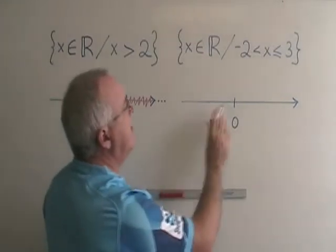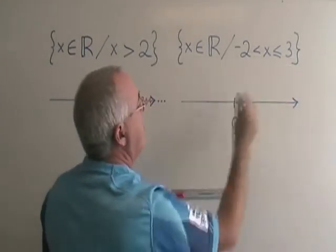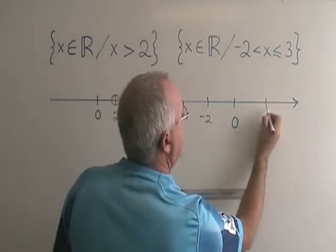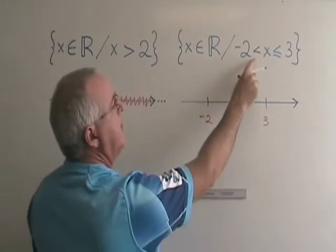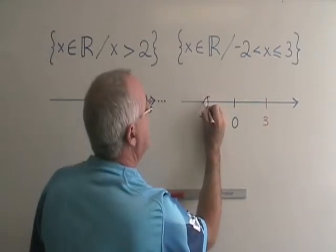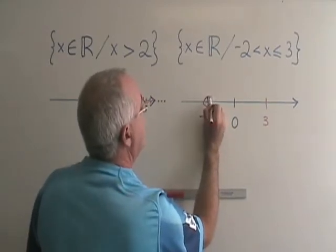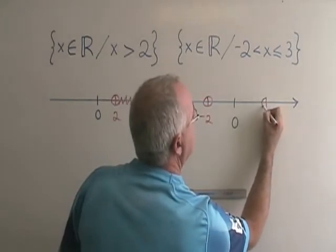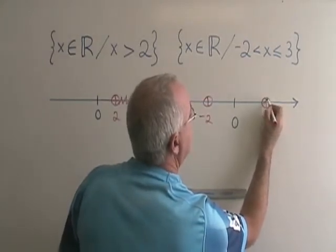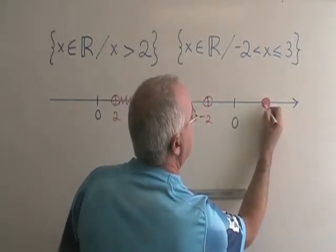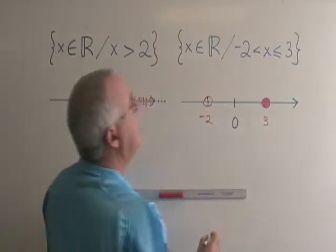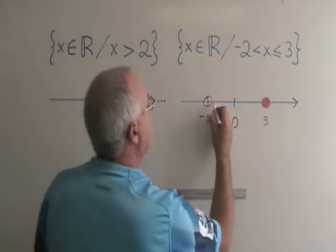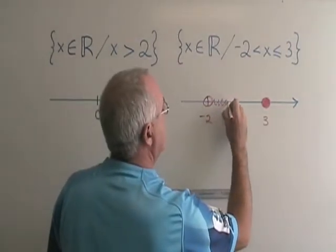Over here, I'm given two limits: negative 2 and 3, so I show both of them. Negative 2 is not included, so I put an open circle around negative 2. And 3 is included, so I put a closed circle on 3. This notation means x is in between those two numbers, so I am shading in between those two numbers.